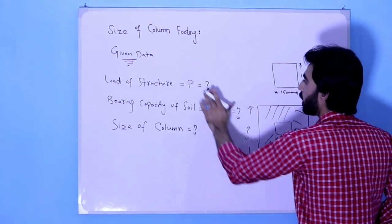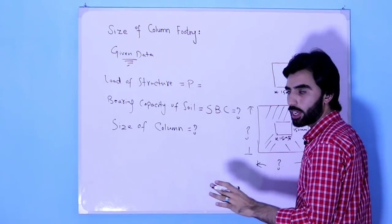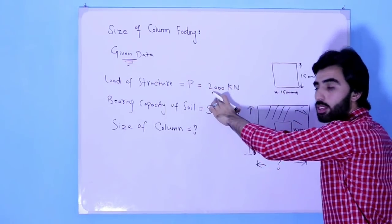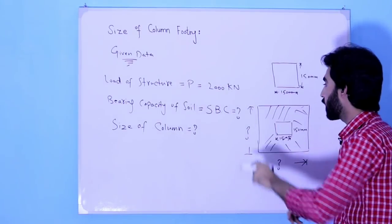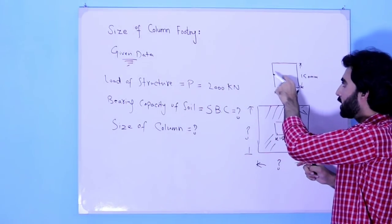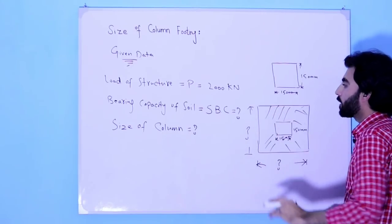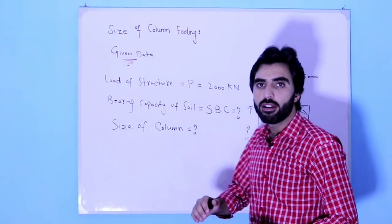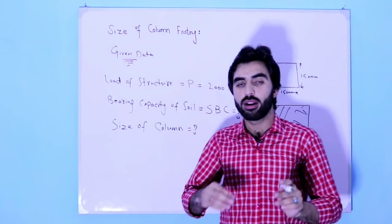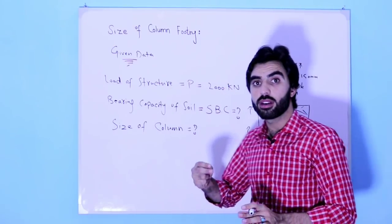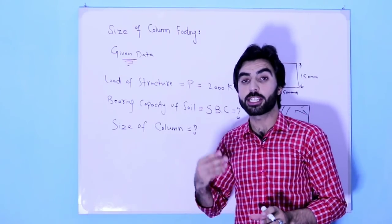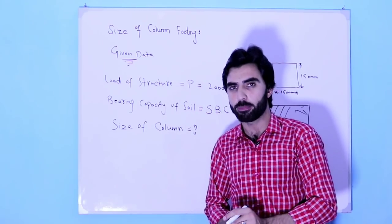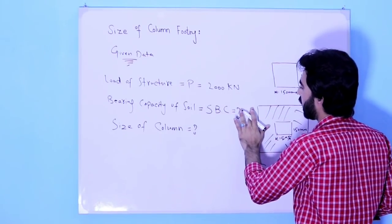So suppose P equals 2000 kilonewtons — that is the load of the structure on this footing and column, whose size is 150 by 150 millimeters. Now we need the bearing capacity of the soil. We find this by testing the soil, because different types of soil have different bearing capacities.